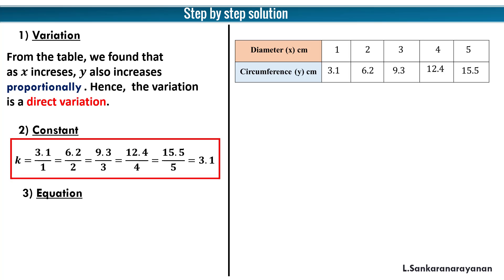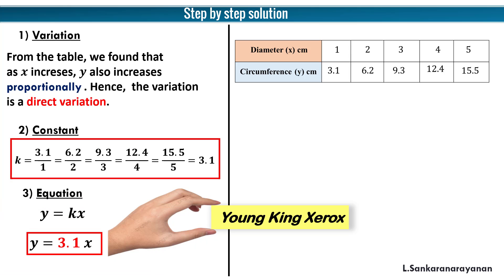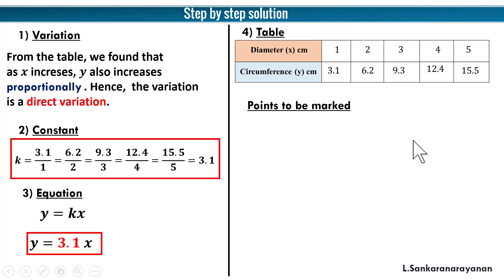Third one is equation. We are going to write the equation: direct variation equation. So what is it? y equal to kx. How to remember that? En-king-ox: y is equal to kx. So y equal to 3.1x. Next, fourth step is table. We have already put the table here. Remember that if the table is given in the question itself, you have to write once again here in order to mark the points.